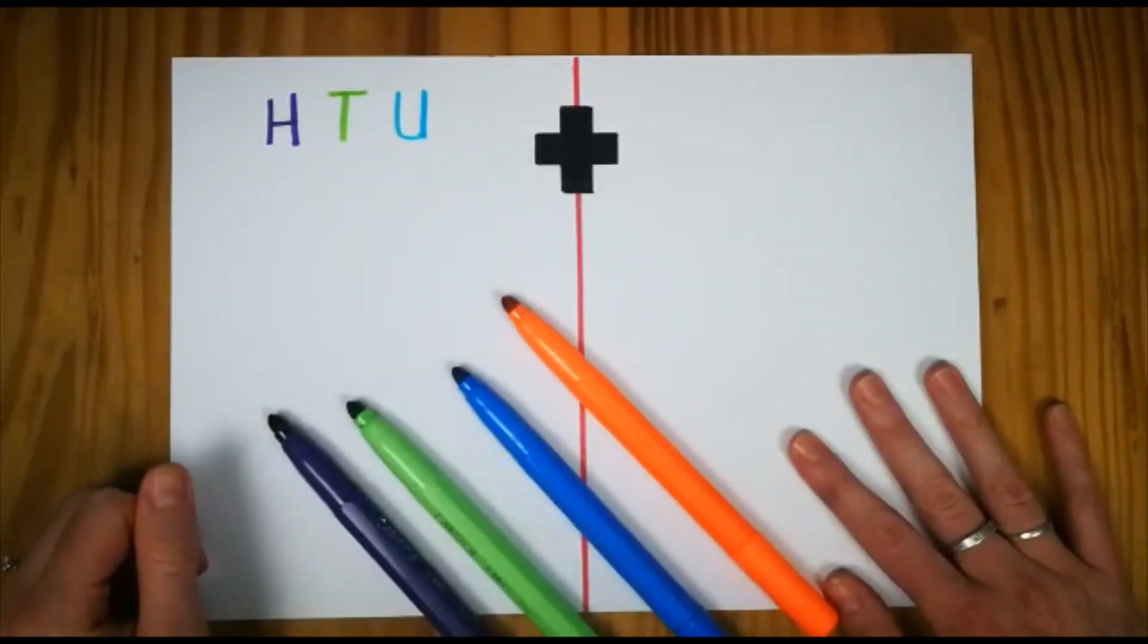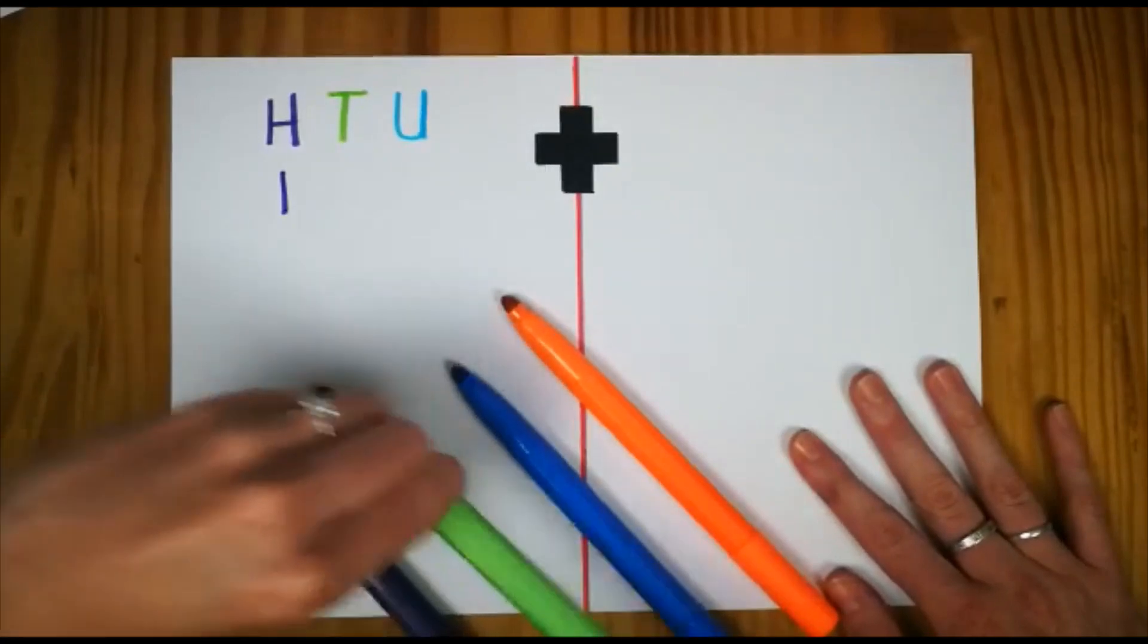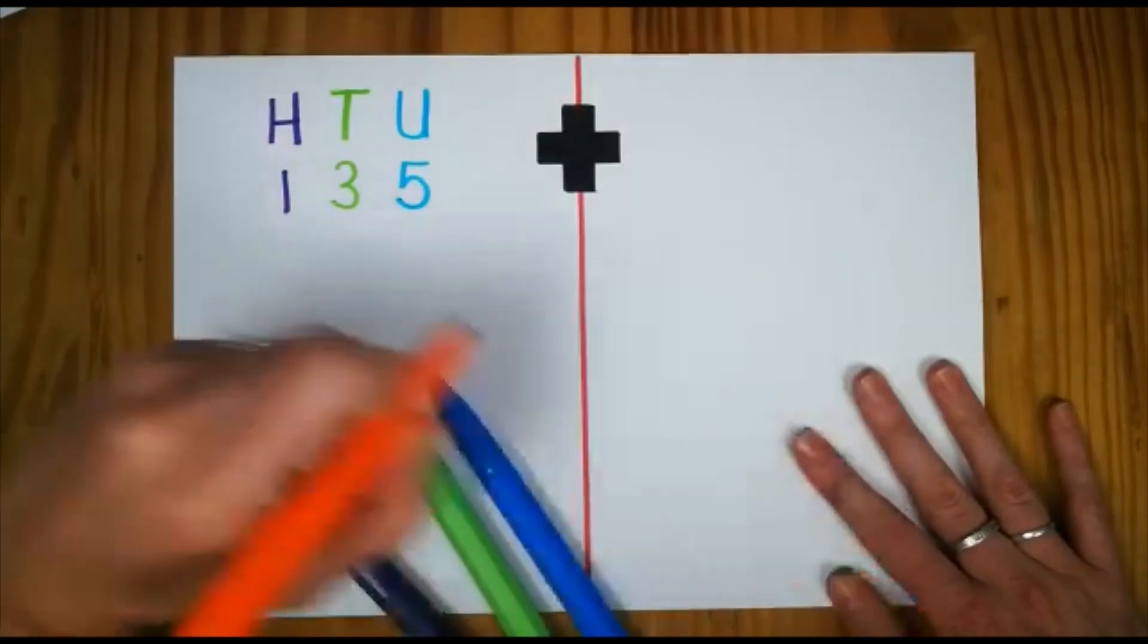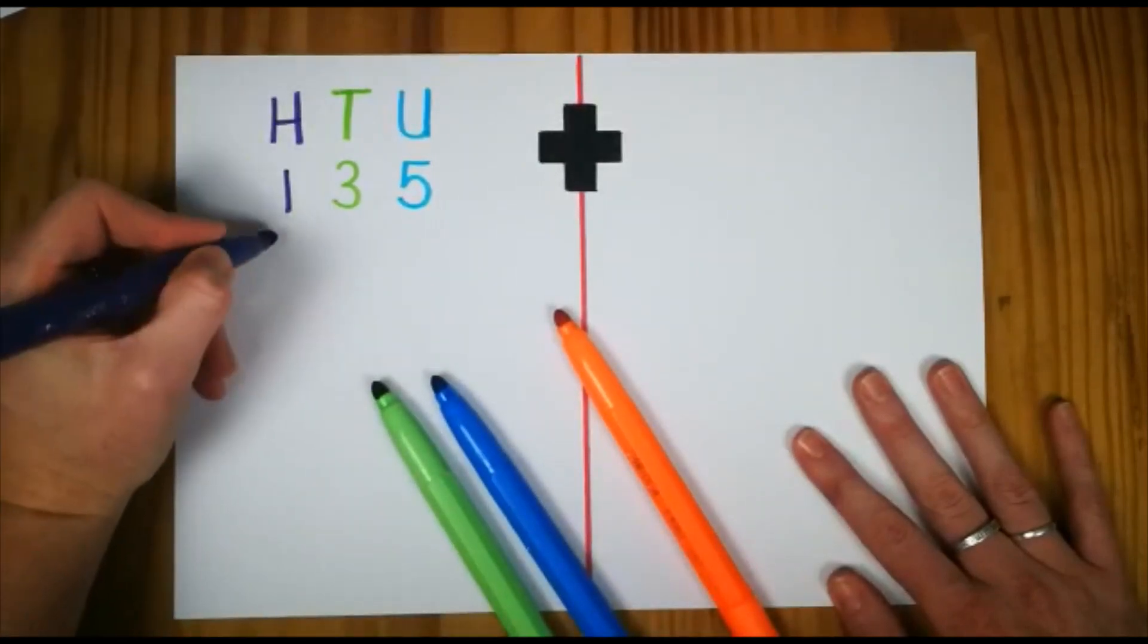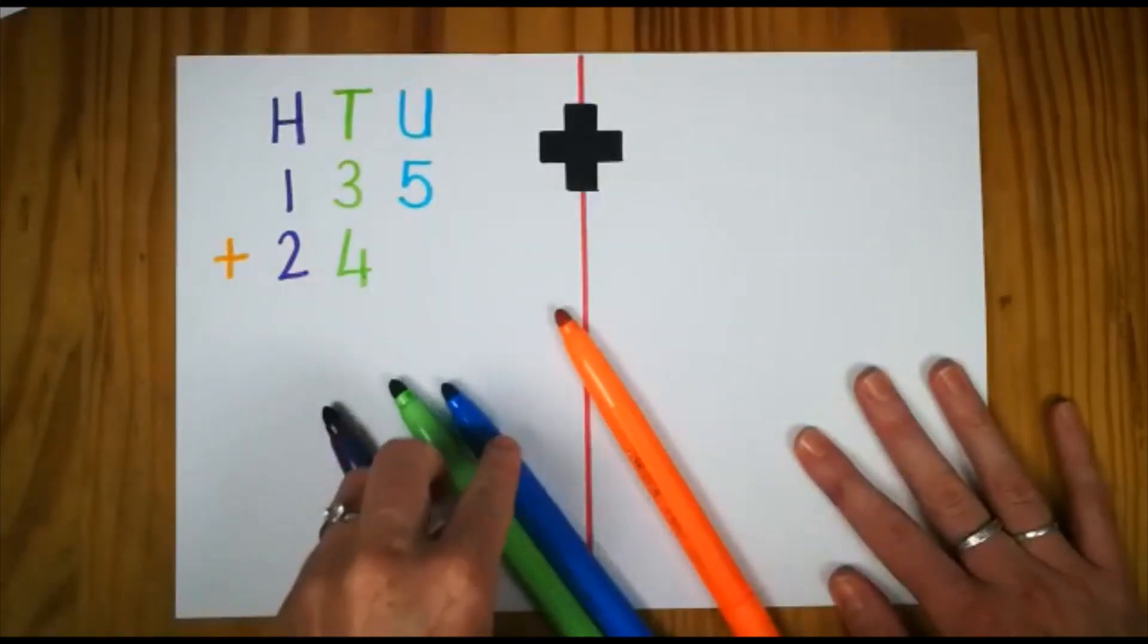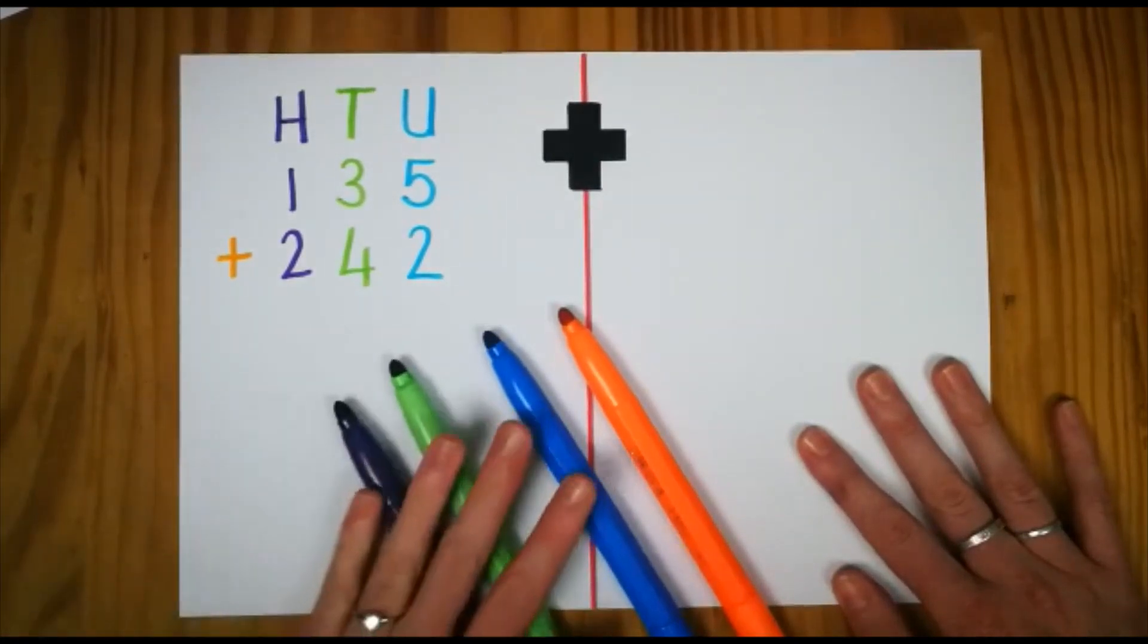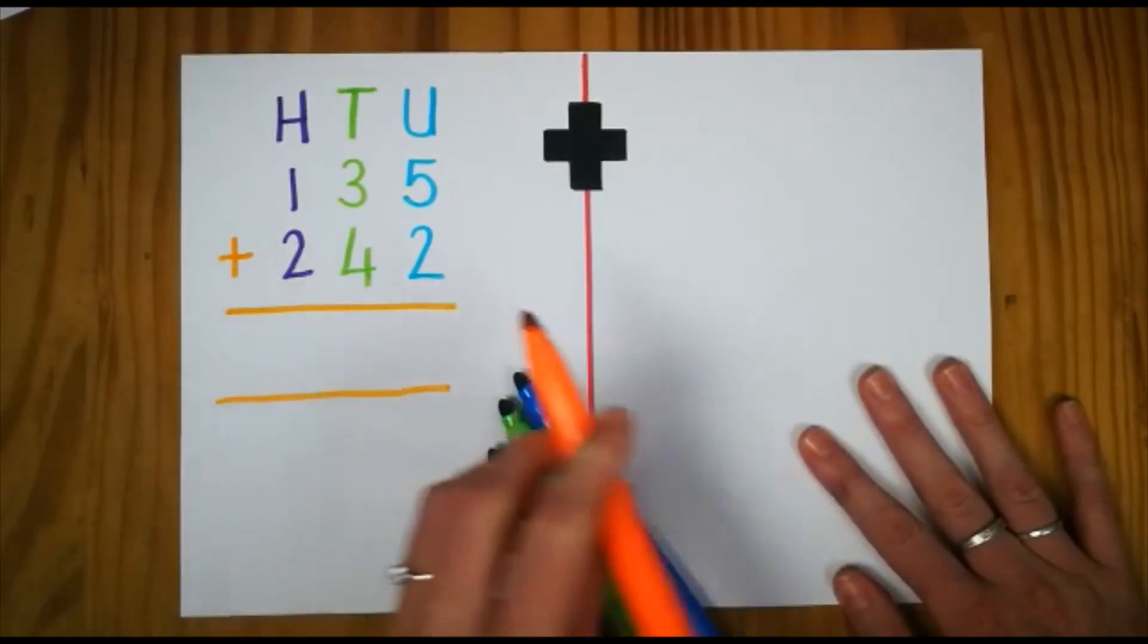So we're going to start with our first sum for today. And our first sum is going to be 135. We know that it is an addition sum, a plus sum. So I'm going to add my operational sign, plus 242. Now I have my addition sign, my plus sign. I also need to have my equal sign. So I'm going to make a really big equal sign to put the answer of my sum.